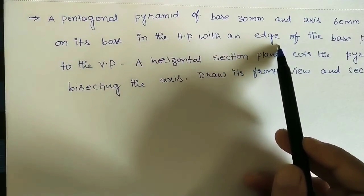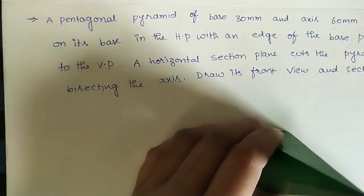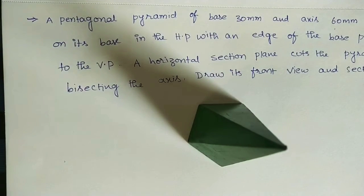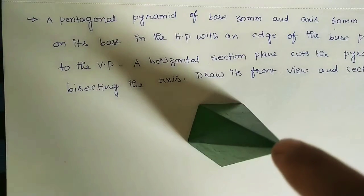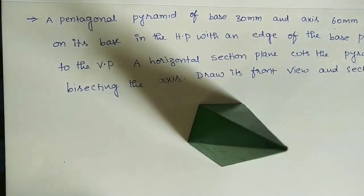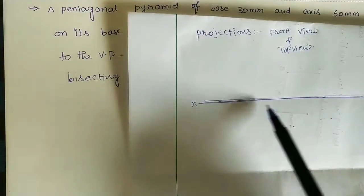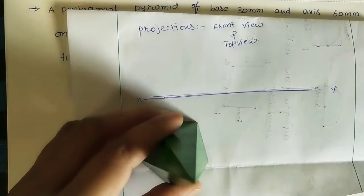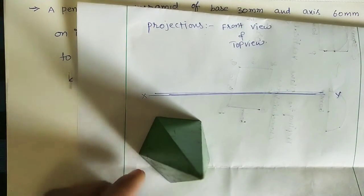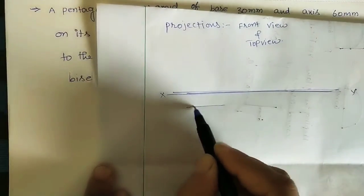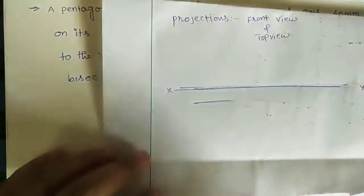Now we do the projections. We need to draw the front view and top view. In the top view — looking from the top — you see the pentagon, with the slant edges meeting at the center. So first, do the pentagon in top view. We take a reference XY line of some length, and initially draw the top view since the polygon appears there.